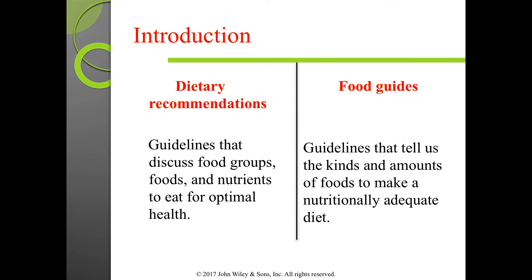From 1956 until 1992, the USDA recommended the Basic 4 food groups. In 1992, they designed the Food Guide Pyramid — an education tool with the most important foods at the foundation and lesser important foods like excess fats and sugars at the top. The pyramid version included recommended servings of each food group, which previous guides didn't.